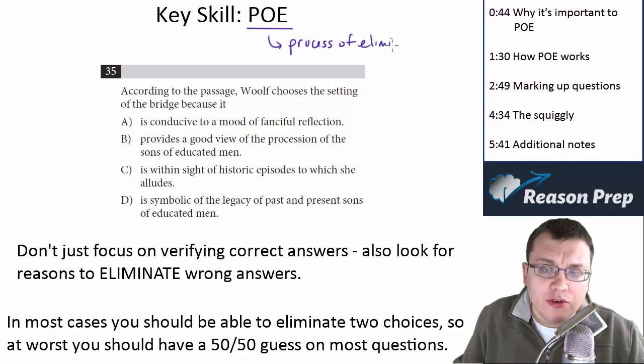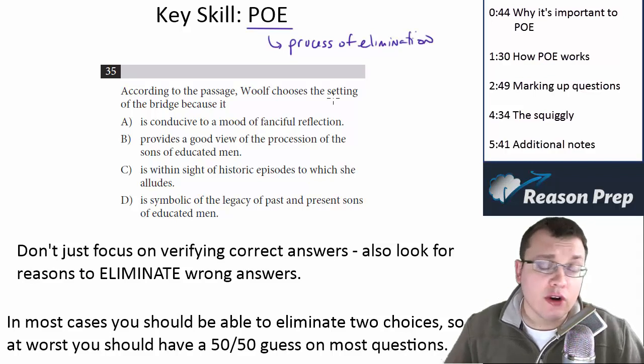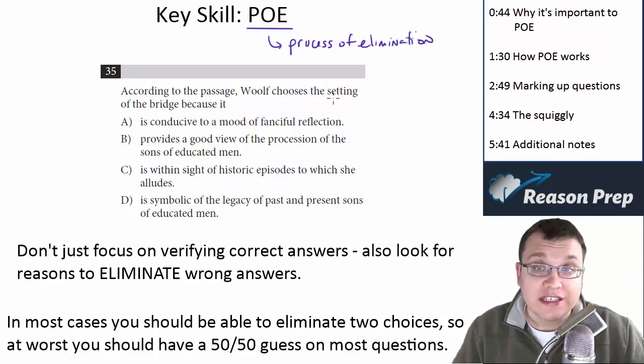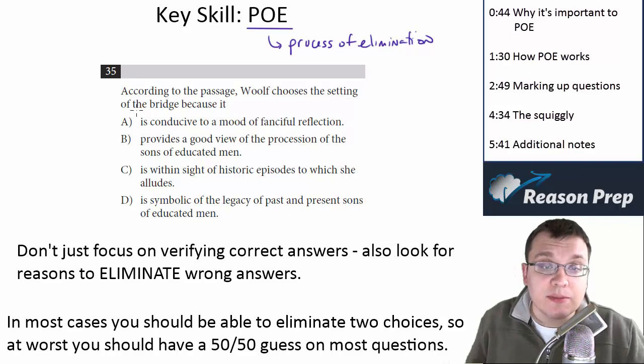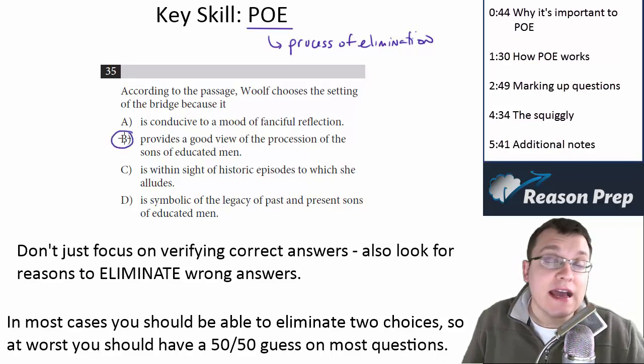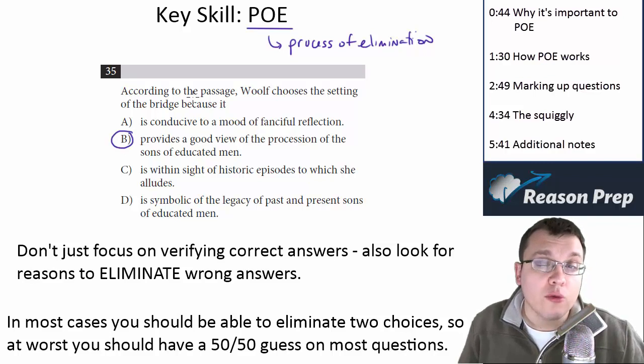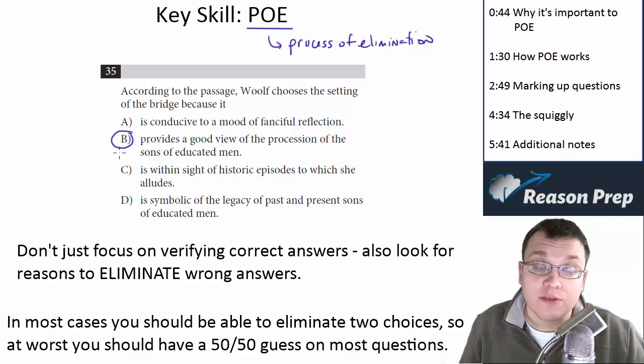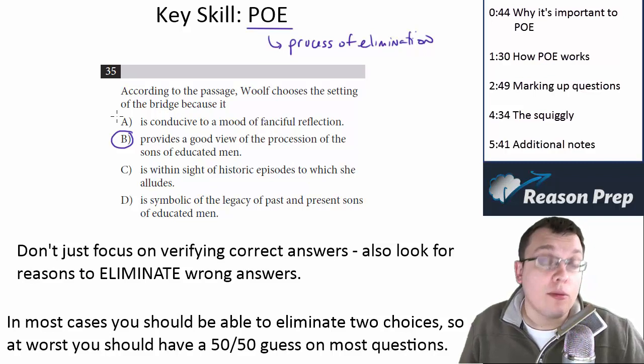Many times when I'm working with students on the SAT, I'll take a look at their reading homework that they've done for the day. And what I'll usually see is a bunch of sections, a bunch of questions, where just the answer is circled. There's no other work in the question. All there is is the circled answer. There's no crossouts, there's no underlines, there's no marks, nothing indicating the thought process.